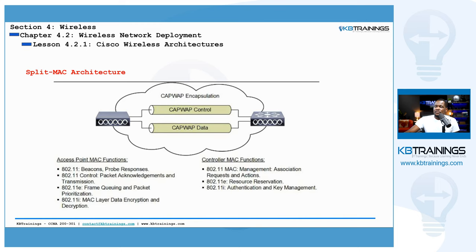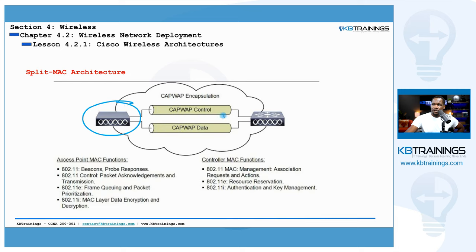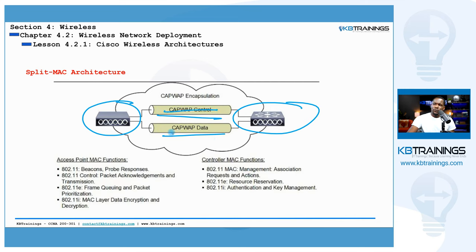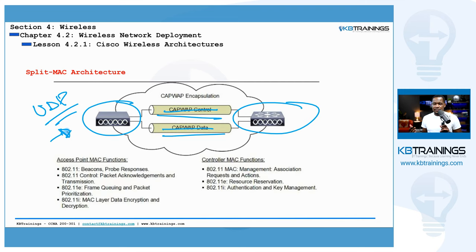I also have this image from the Cisco documentation — I'll provide links to that documentation so you can read more. It clearly shows a lightweight access point and a wireless LAN controller with CAPWAP tunnels between them. One tunnel is used for control, the other for data, using UDP on specific port numbers. The image also shows the function split between the access point and the controller.